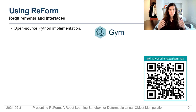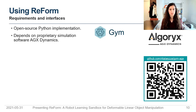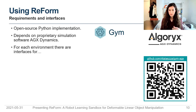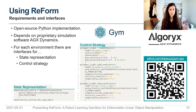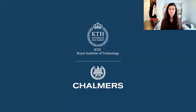In summary, to use ReForm you need a Python environment, and it depends on Gym and on the simulation software AGX Dynamics. You can modify very easily the current environment by modifying the state representation, the control strategy, and for the explicit shape control problems, even the reward function. That's all for me. Thank you.